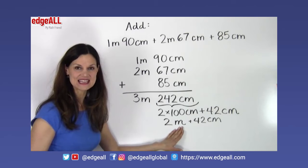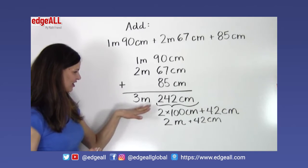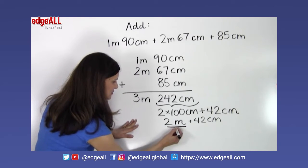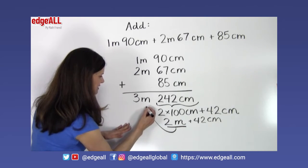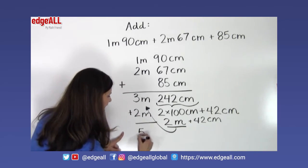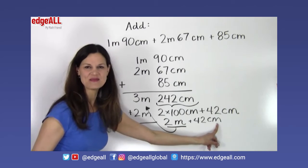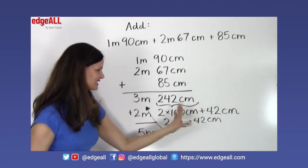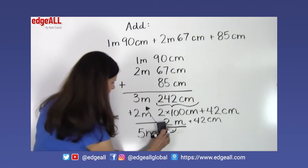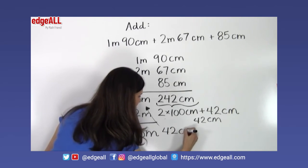So now I'm going to take these 2 meters and I'm just simply going to move them over here to be with this measurement of meters. So I'm going to take this 2 meters and bring it over here with this 3 meters. And I'm going to add 3 meters plus 2 meters, which equals 5 meters. Now I don't want to forget that I still have these 42 centimeters over here that are still part of the centimeter measurement. So I'm going to say 5 meters 42 centimeters.